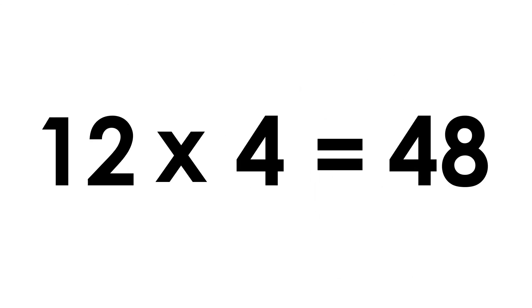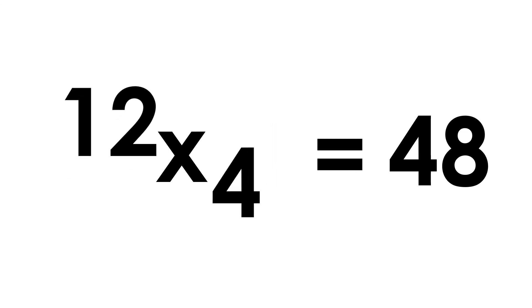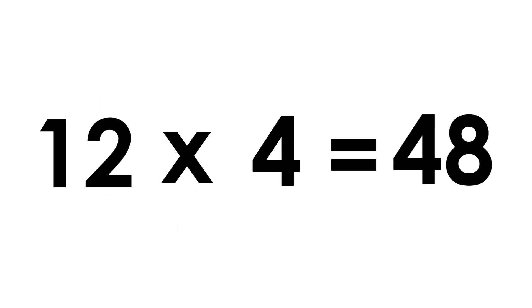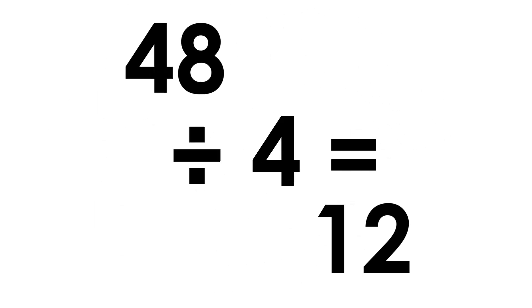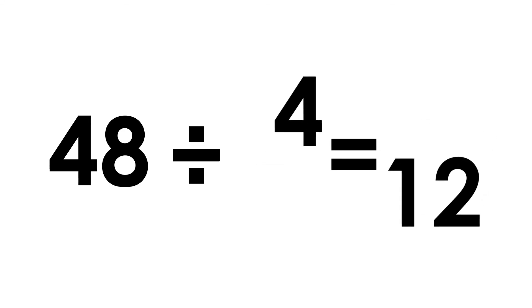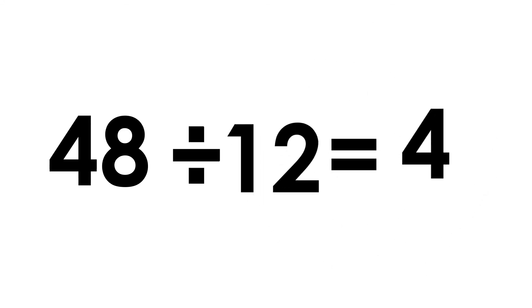Twelve fours are forty-eight. Four twelves are forty-eight. Forty-eight divided by four is twelve. Forty-eight divided by twelve is four.